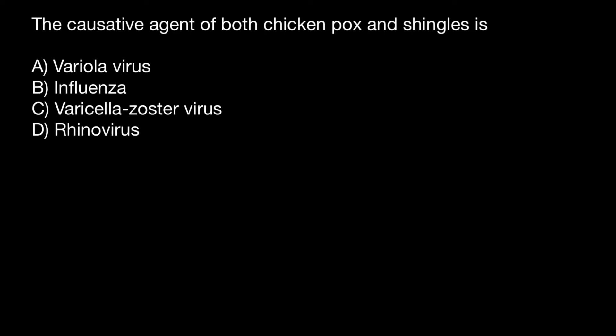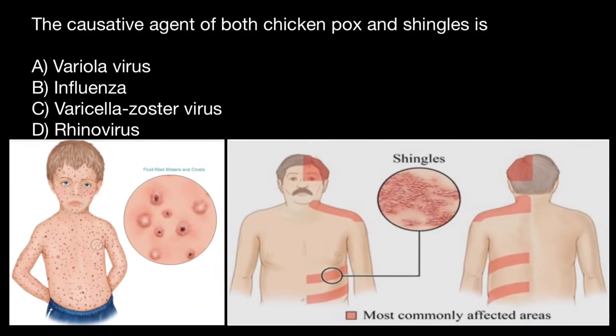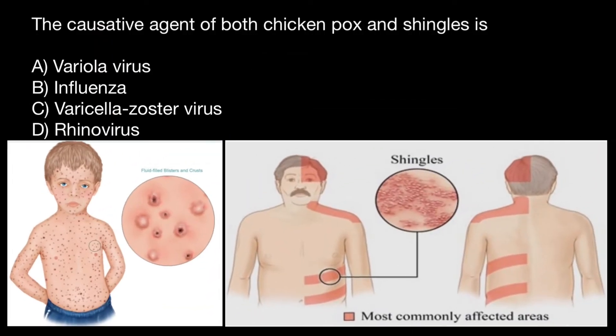Hello, and welcome to Nikolai's genetics lessons. Today's problem is: the causative agent of both chickenpox and shingles is — and you have to choose one of these answers. This picture will help me explain which answer to choose.